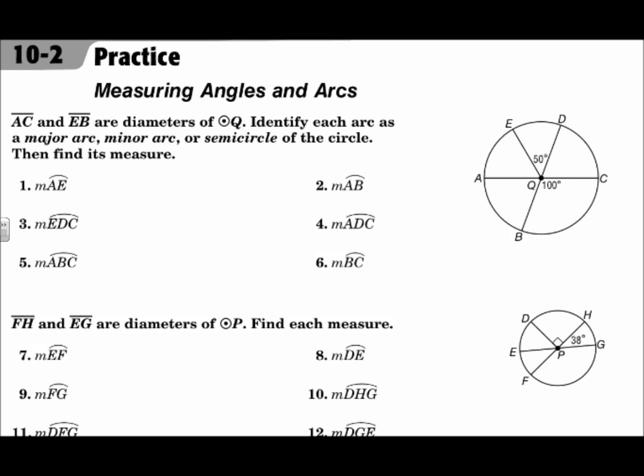A major arc is an arc that goes from one point around the circle to the other point that goes more than halfway around the circle. So from E, it would be better if I traced on the circle itself, from E to C is a major arc, and it also goes through points A and B. A major arc has to be named with three points, the two on the end and any one along the way. So this one could be arc EAB or arc EAC or arc EBC.